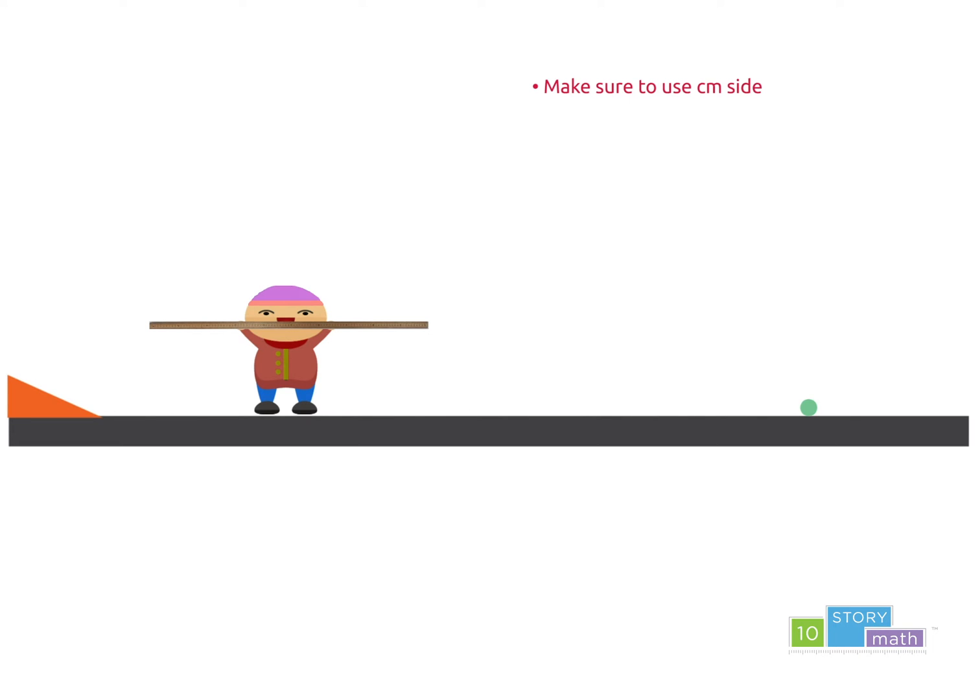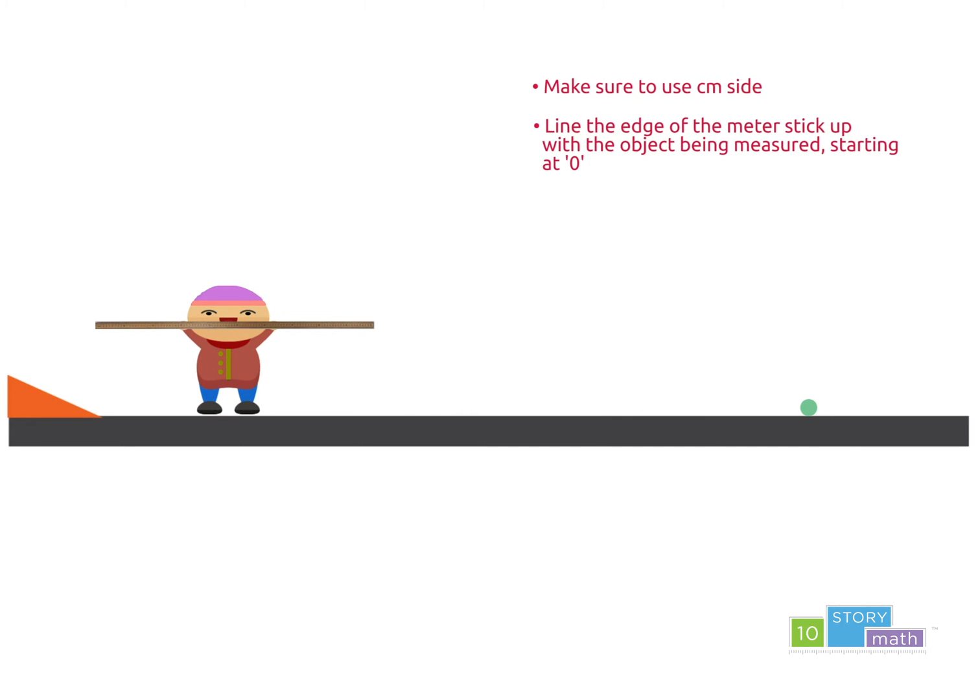line the zero of the meter stick up with the starting point of what is being measured. Let's make sure the meter stick is always flat along the ground.